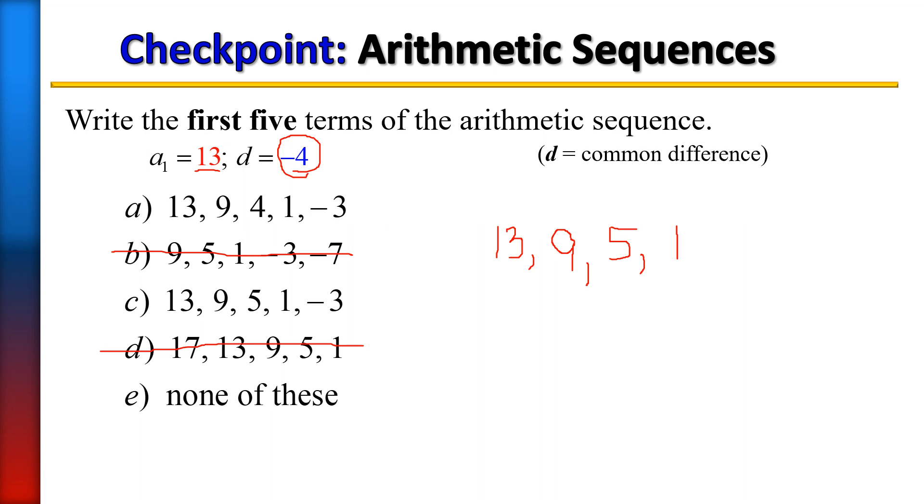minus 4, signs are different, subtract, take the sign from the larger number. That would give you -3, which as we can see here, that would be choice C.